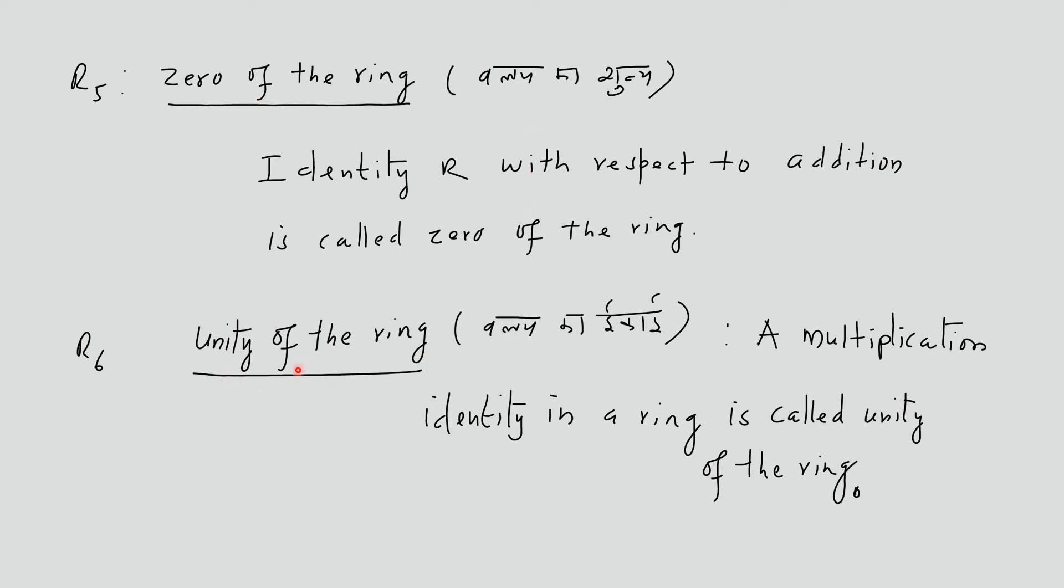R6: Unity of the Ring. A multiplicative identity in a ring is called the unity of the ring.